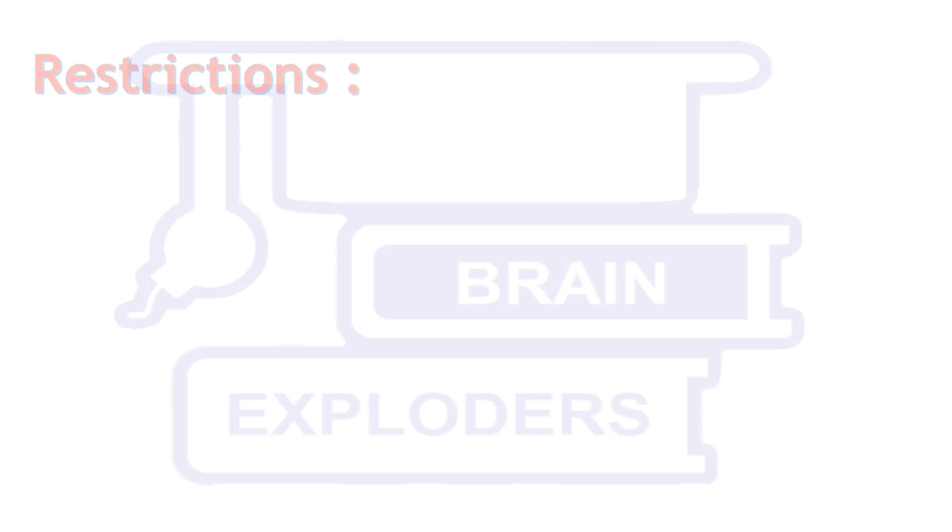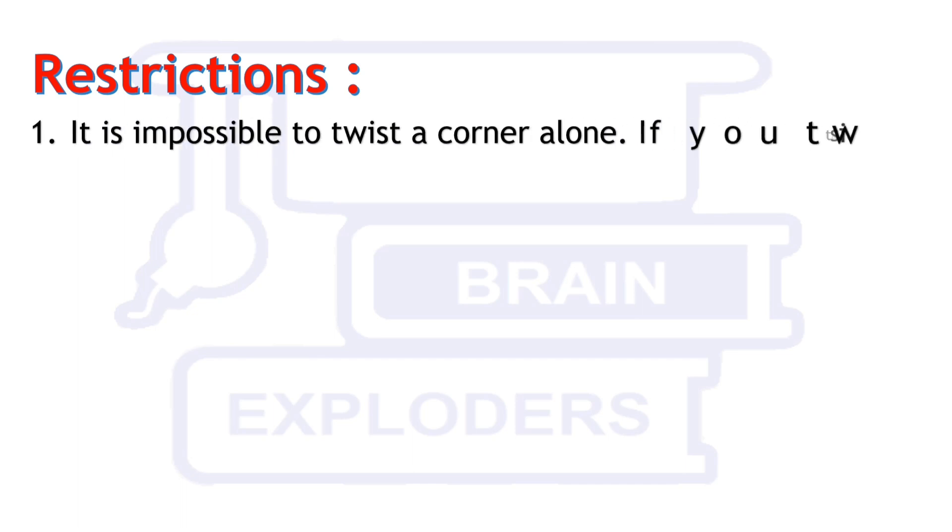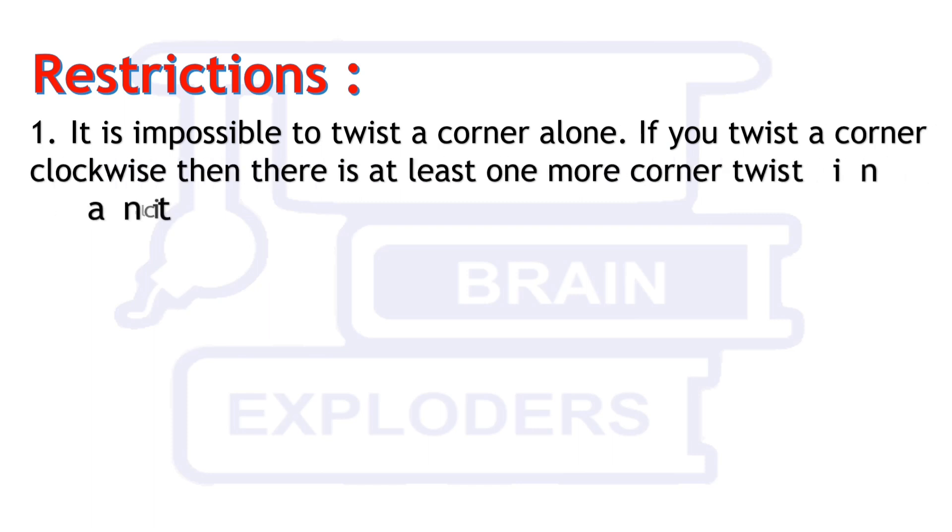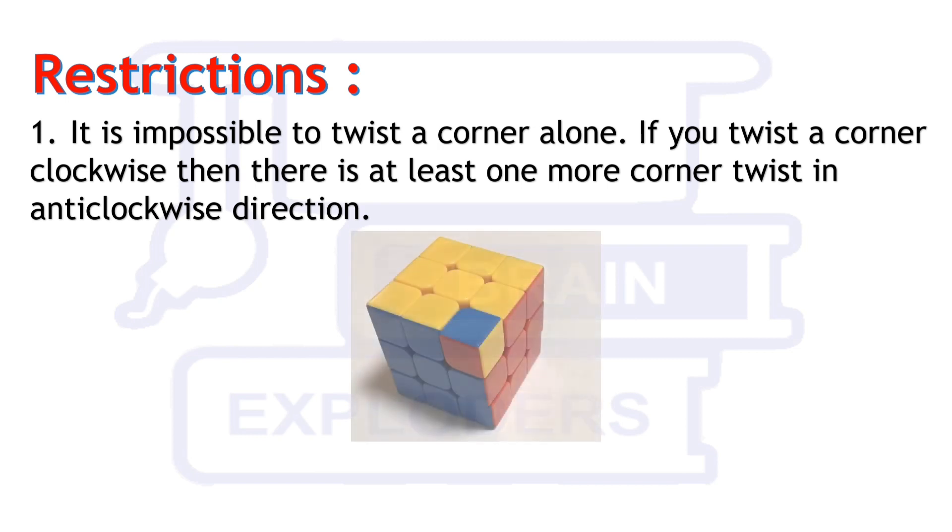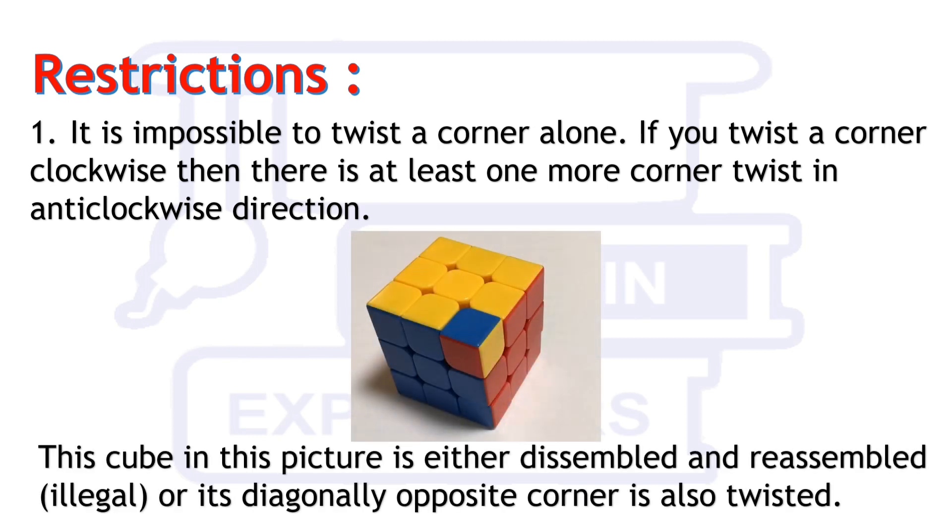This was clear information for a beginner. But if you start solving the Rubik's cube, you will get to know that there are some restrictions which you cannot perform. Those 3 restrictions are discussed here. First, it is impossible to twist a corner alone. If you twist a corner clockwise, then there is at least one more corner twist in anti-clockwise direction. This cube in this picture is either disassembled and reassembled or its diagonally opposite corner is also twisted.